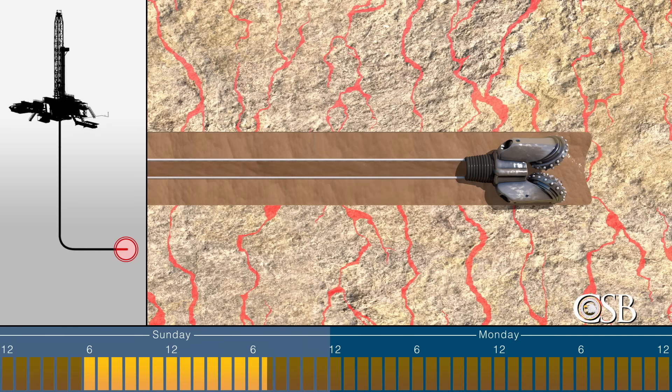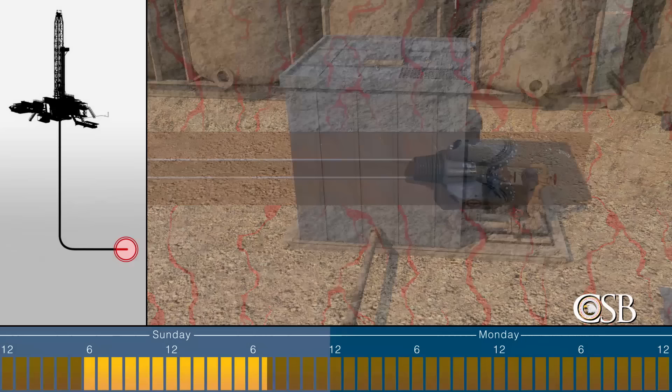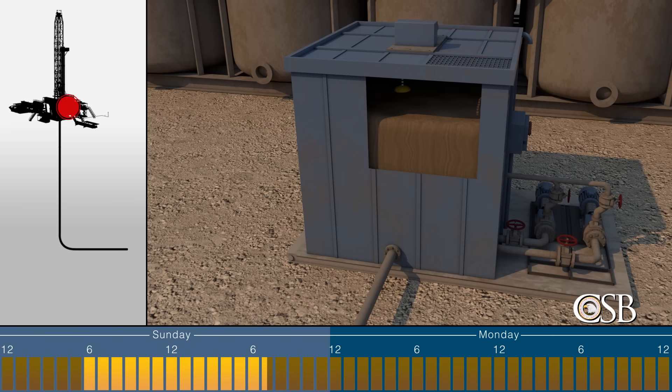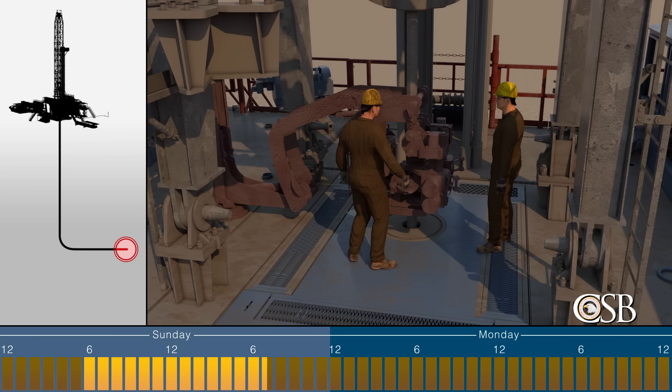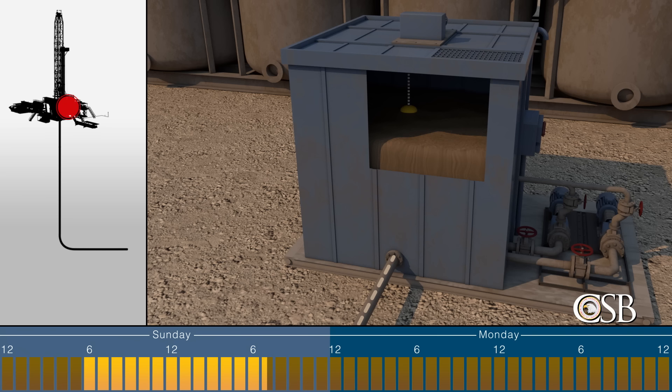The process to remove a drill pipe is called tripping. During any tripping operation, mud is pumped into the well to replace the volume of drill pipe being removed, which prevents gas from flowing into the well. In this case, the Red Mountain representatives decided to use a tripping method called calculated fill, which involved periodically pumping a calculated amount of mud into the well as the drill pipe was removed. They believed this method would keep the well contained if gas entered during the operation. But it was not a standard tripping method during normal drilling, so no one on the Patterson crew had performed it before, and they had no written procedure.